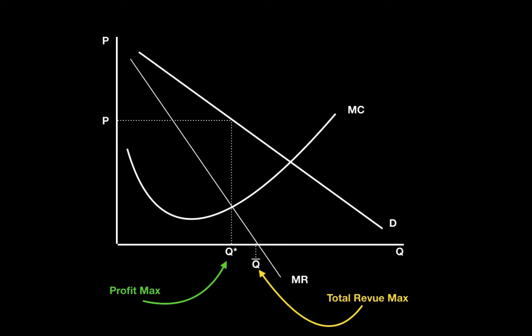This graph from your microeconomics course shows that if a manager seeks to maximize revenue, she does so at the expense of profits. The graph is for a firm that faces some market power as the demand curve slopes down. Total sales revenue is maximized at Q bar where marginal revenue equals zero. However, this is past the profit maximization point. Profit maximization takes place at Q star where marginal revenue equals marginal cost.